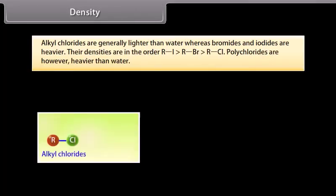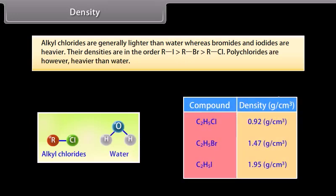Density. Alkyl chlorides are generally lighter than water whereas bromides and iodides are heavier. The densities are in the order RI greater than RBr greater than RCl. Polychlorides are however heavier than water.